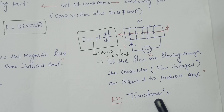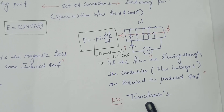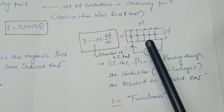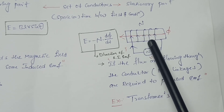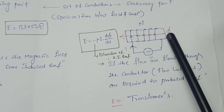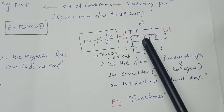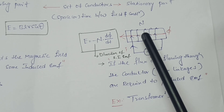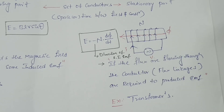The transformer is the best example for statistical induced EMF. In a transformer, the conductors are stationary and the flux moves in a circulating manner. Because the conductors are stationary and the flux is moving, the transformer perfectly illustrates statistical induced EMF.